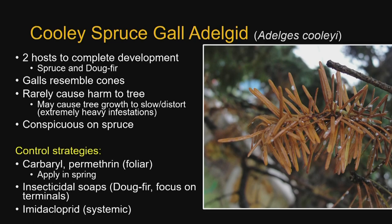Control strategies for Cooley spruce gall adelgid include carbaryl and permethrin, applied foliar to the needles in spring. Insecticidal soaps can work on the Douglas fir phase, and you want to focus on the terminals. Imidacloprid can also be used to get the insecticide into the tree itself with less off-target effects. We do have problems with uptake of systemic insecticides in the Southwest — because of drought, trees need to be well-watered to have good uptake. Keep that in mind during drought periods.